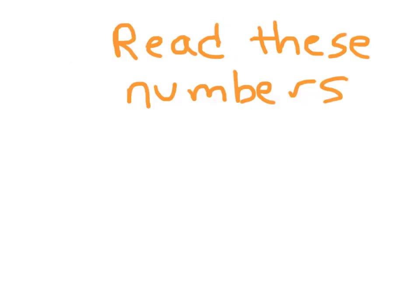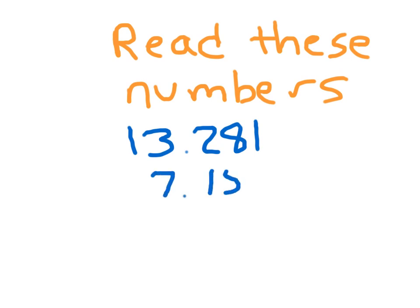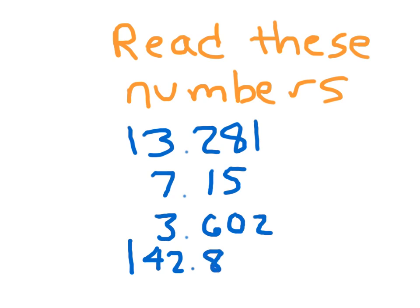Here are some more decimal numbers for you to read. Let's try this one here — that's 13 and 281 thousandths. Here's another number — did you say 7 and 15 hundredths? How about this one? 3 and 602 thousandths. Final number: that's 142 and 8 tenths.